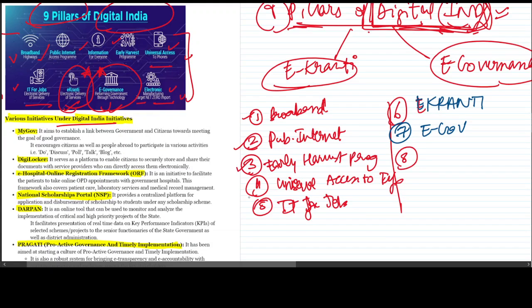Let me verify the nine pillars: broadband, public internet, early harvest, universal access to information is fifth. Yes, information for everyone is one pillar, and ninth and final one is electronic manufacturing.